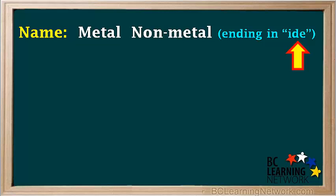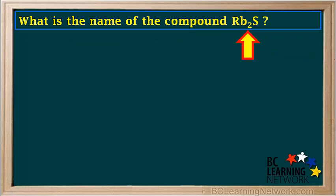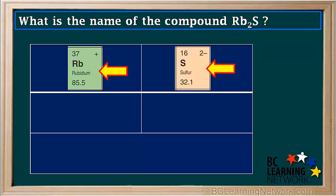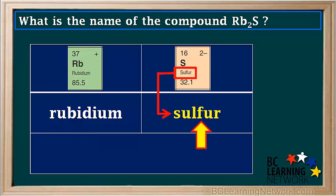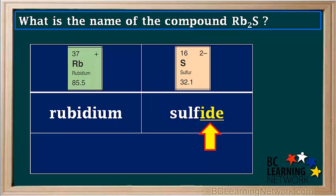Let's do a couple of examples. What's the name of the compound Rb2S? We find the two elements: rubidium, number 37, and sulfur, number 16, on the periodic table. The metal name is rubidium, and the non-metal name is sulfur, but we change the ending on sulfur to IDE, so its name is sulfide.